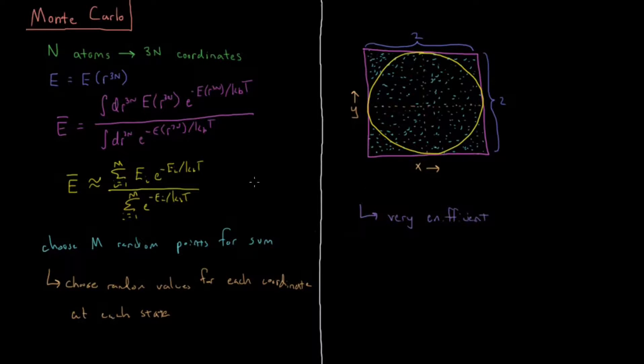It's also inefficient for another reason because most structures don't contribute. So large number of configurations, meaning our number of M that we would have to choose would be enormous. It's inefficient for another reason because most structures don't contribute.